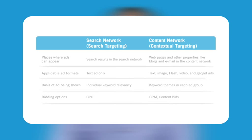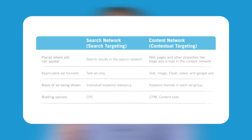If you want an ad to run on the search network and the content network, it is best to create two separate campaigns — one structured for search and one structured for the contextually targeted advertising. This allows you to structure each campaign with different goals. Contextually targeted ads show on many web properties. Acceptable ad formats include text, image, flash, video and gadget ads.